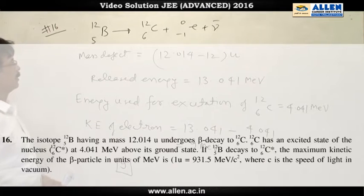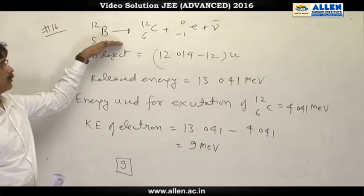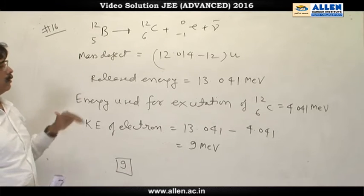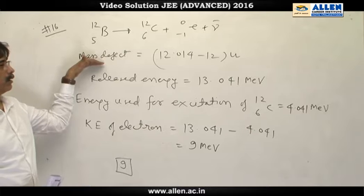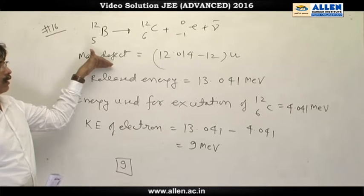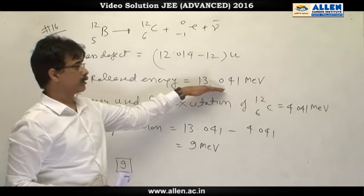Question number 16, the beta decay equation is this. From the given values, we can calculate the mass defect and when mass defect is converted to energy, release energy that comes out to be this value.